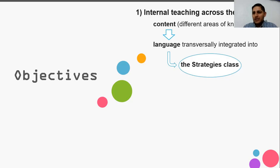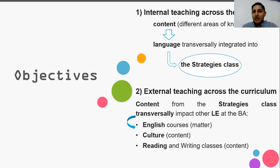This course is part of the curriculum of the BA in English Language at Universidad de Veracruzana. The second objective is external teaching across the curriculum — in other words, to take the content from the Strategies class and transversally impact on other learning experiences in the program: English courses, culture content, and reading and writing classes. Those are the two concepts I manage in my proposal.